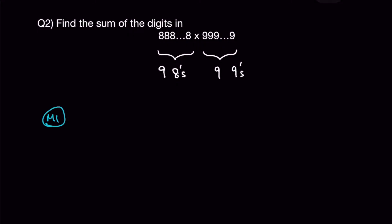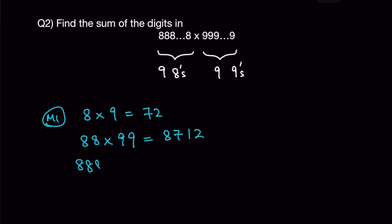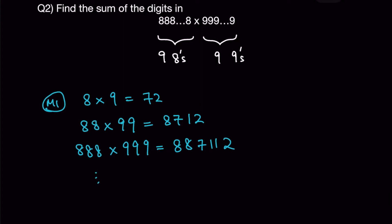Let's look at method 1 first. We start with a small case: 8 times 9 gives 72. Continuing the pattern: 88 times 99 gives 8,712. Then 888 times 999 gives 887,112. If you notice the pattern, you will see 7 and 2 always appear, with the number of 8s and number of 1s varying.